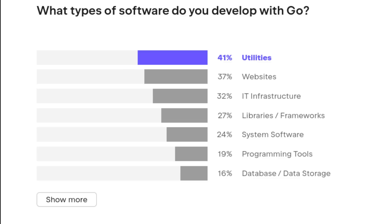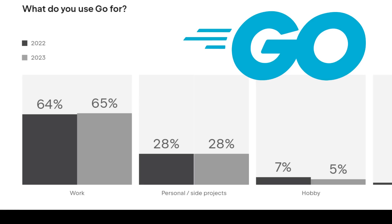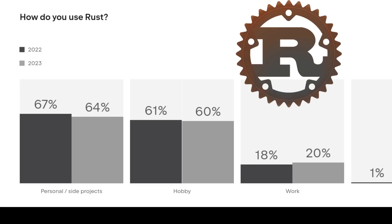Go has seen widespread adoption from cloud and network services to command lines and web development, with the majority of its use being in the workplace by real businesses — as opposed to a language like Rust, which sees most of its use by hobbyists and personal projects. Because of this, in addition to me just not knowing much about the language, I'll skip over Rust.